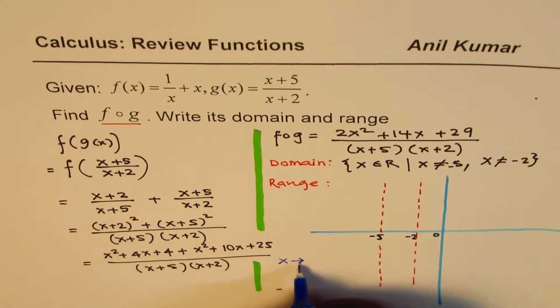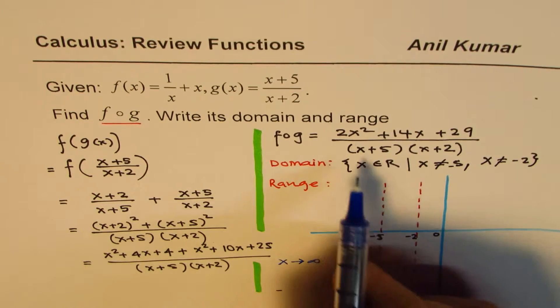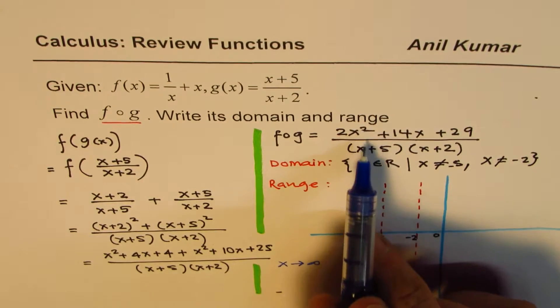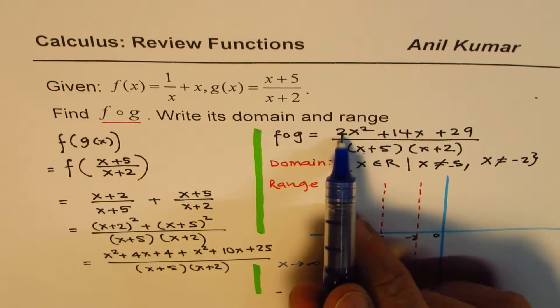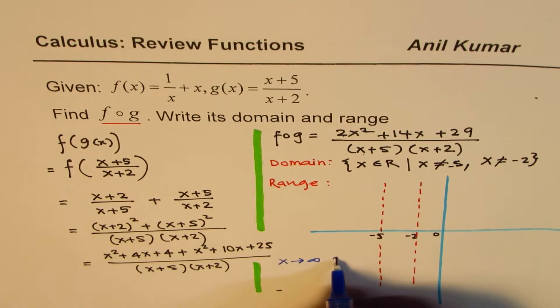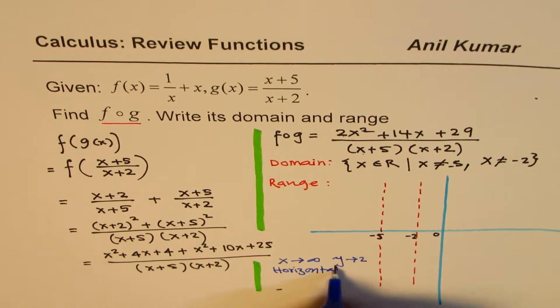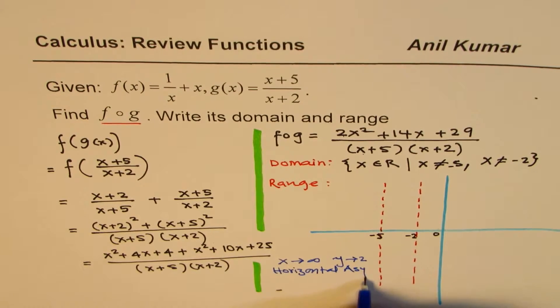So if x is approaching infinity, very large quantity, these terms will be small. So x square, x square will dominate. So y value will approach 2. Y approaches 2. This is what we say, horizontal asymptote.